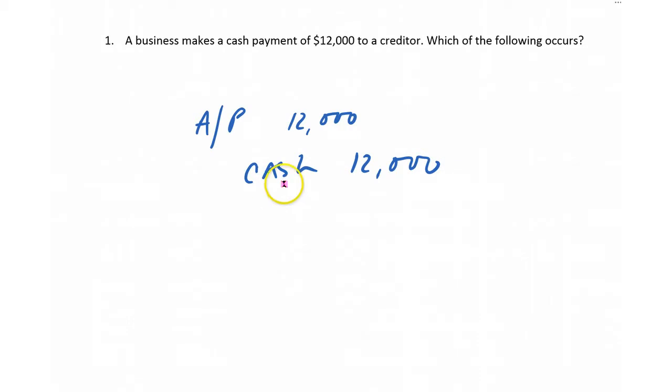In this case, the liability is debited, the asset is credited. With your possible answers, the only one that is correct is cash is credited for $12,000.